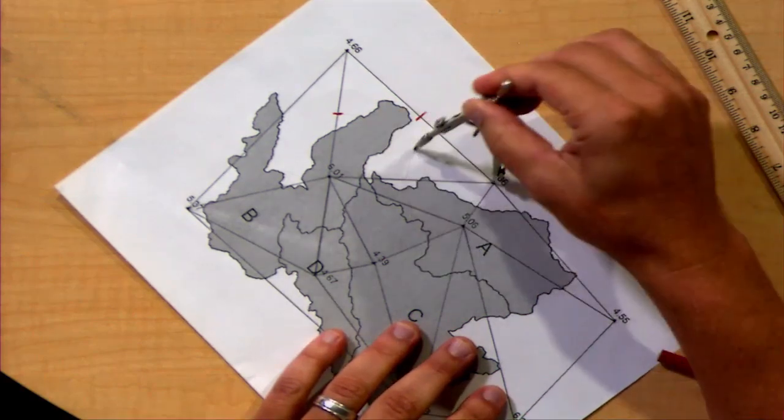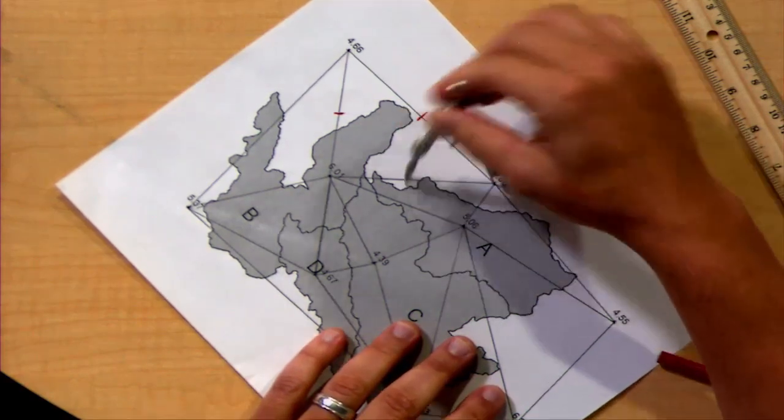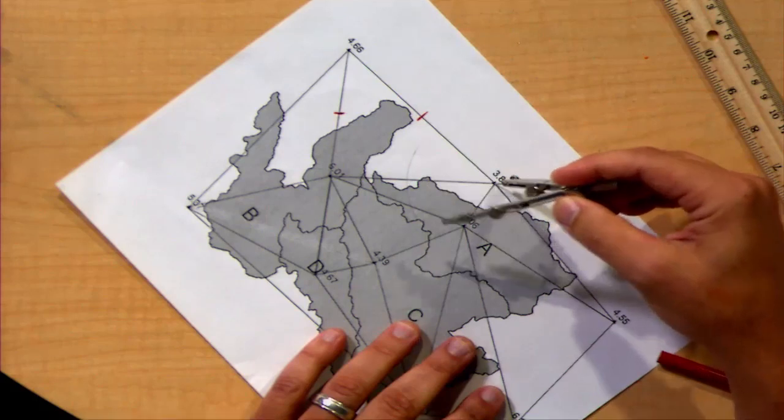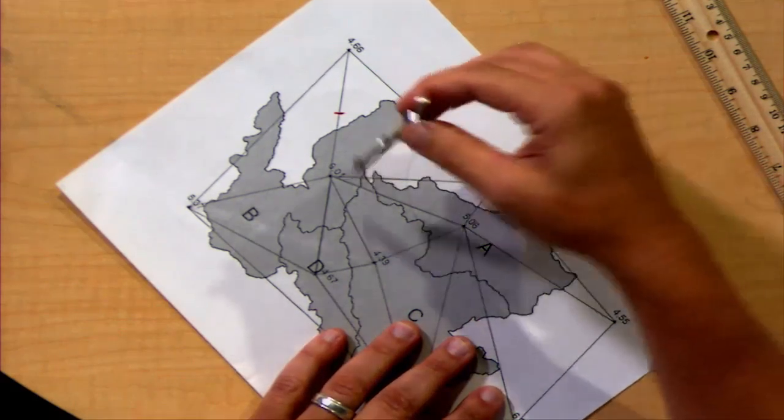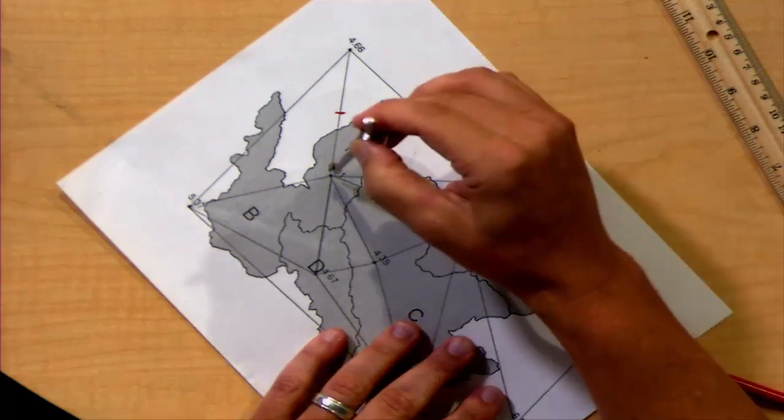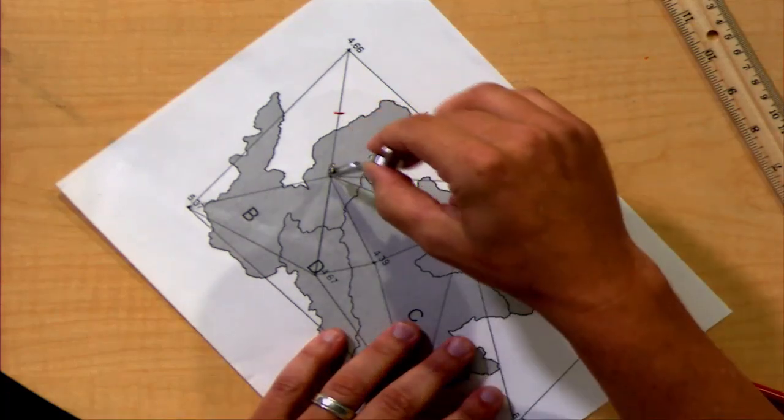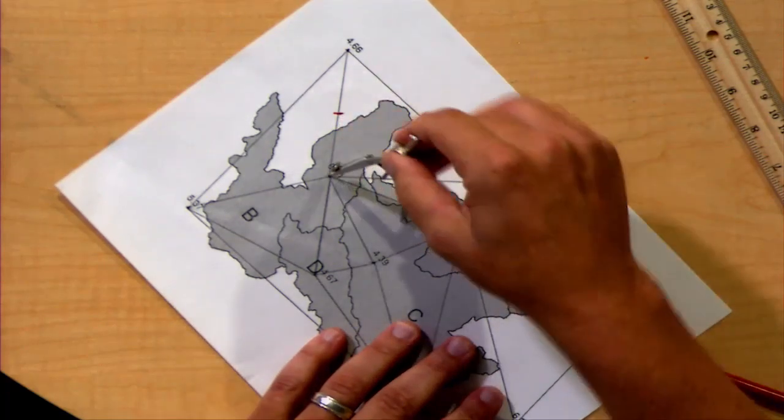And I create an arc. Now, I maintain that exact same size of that arc and place the point of the compass at the other end of the segment. And I create a second arc.